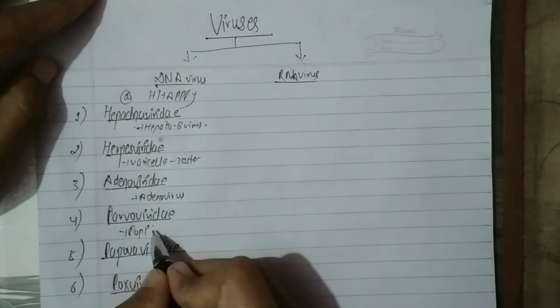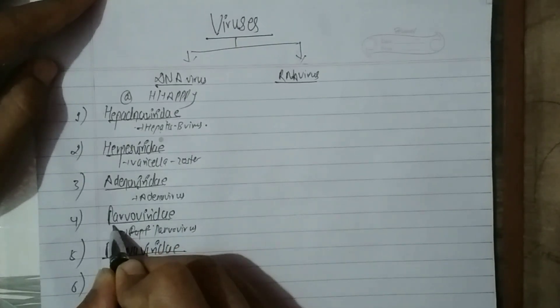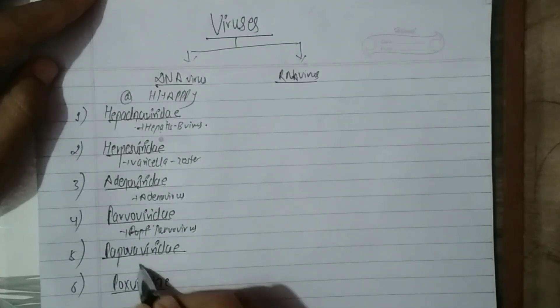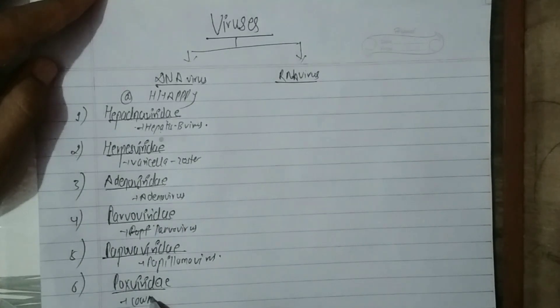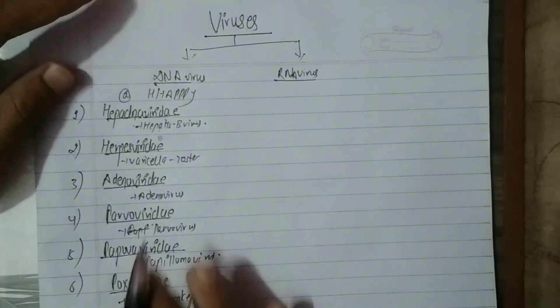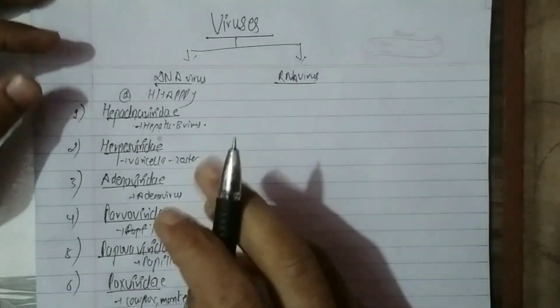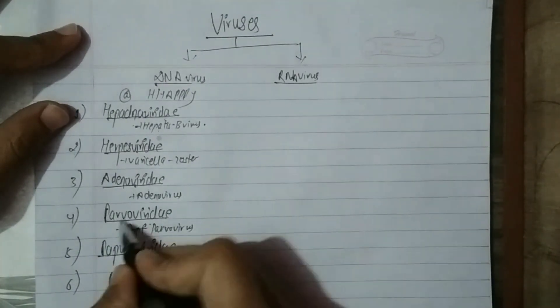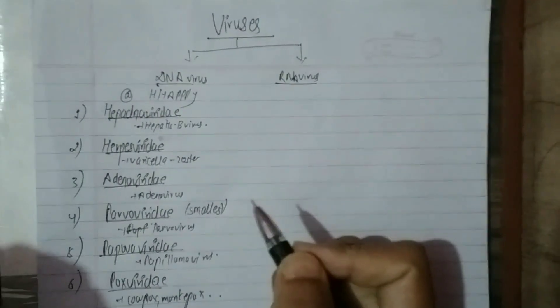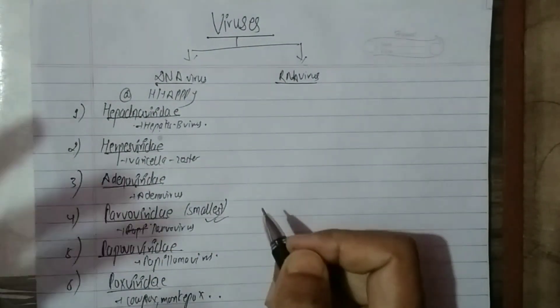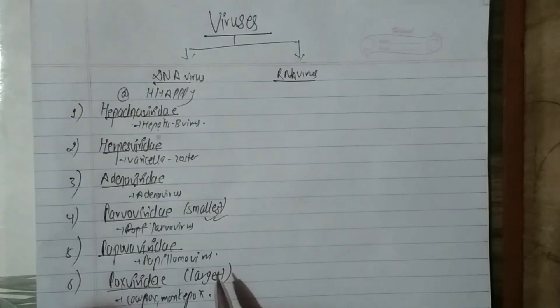Parvo virus — be ready. Parvo virus: that is Papilloma virus — get it, Papilloma virus. Pox virus: smallpox, tobacco pox, monkey pox, cowpox, monkey pox. The smallest DNA virus is Parvo virus. The largest DNA virus is Pox virus — cowpox, monkey pox — the largest one.